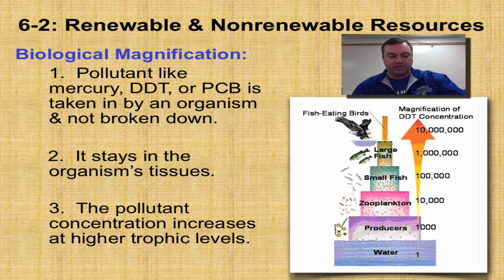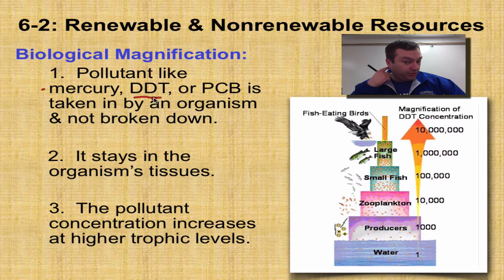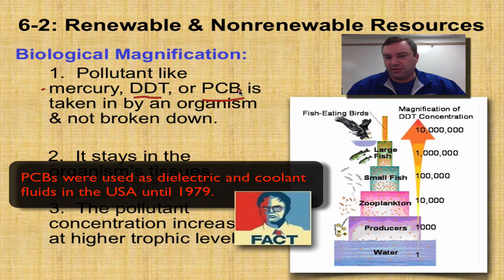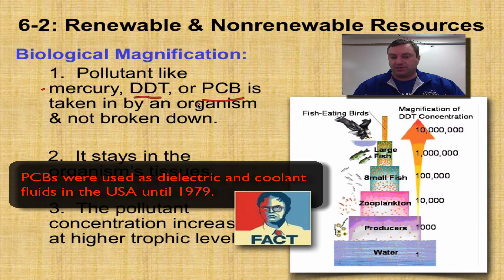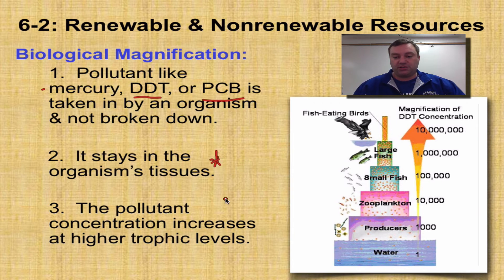Pollutants such as mercury, DDT — which is a pesticide no longer used in the United States but can be used in other parts of the world — and PCBs, which are chemicals that are essentially illegal to use in the United States for this reason. These can be taken in by an organism, and since they're not broken down, they always stay in the organism's tissue.